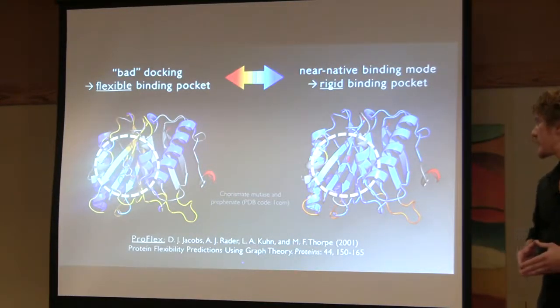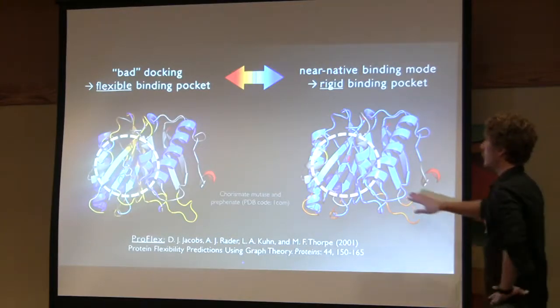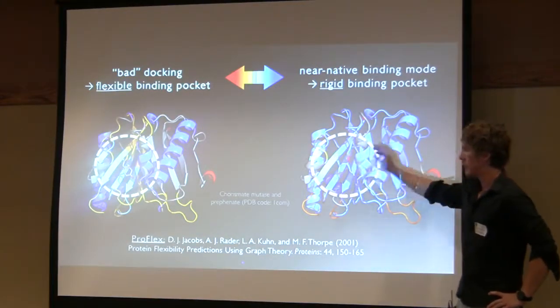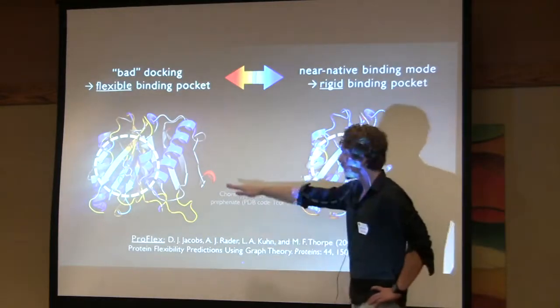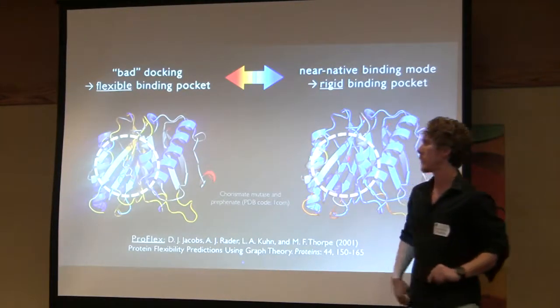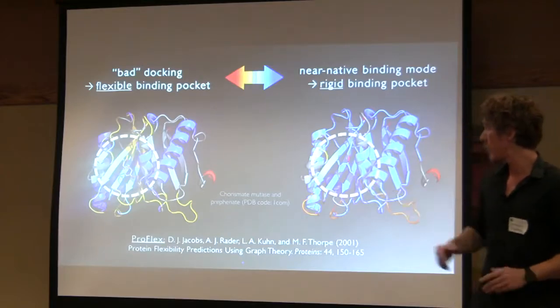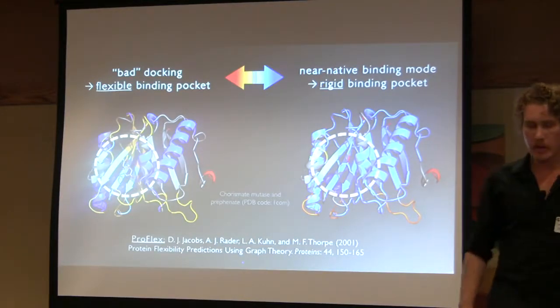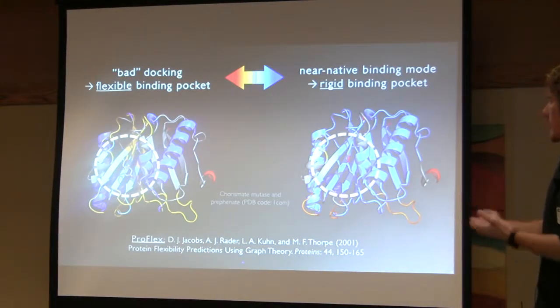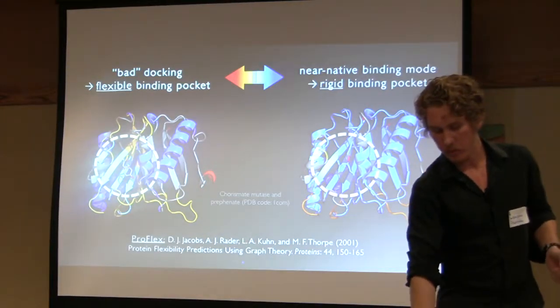This is just one example, so I haven't mentioned it yet. That would be a near-native docking pose, a more rigid binding pocket here, and that would be on the left, that would be a bad docking pose, where the binding pocket is more flexible. For one protein that obviously works, but does it also generalize to other protein folds?